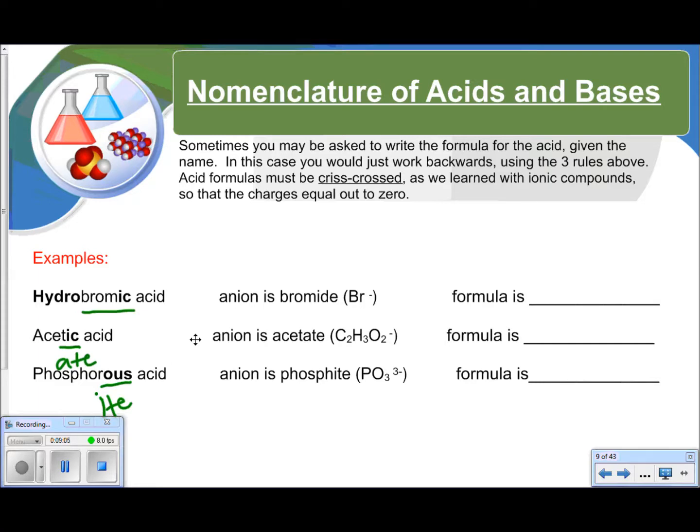So going backwards. If I give you the name and I want you to write the formula, there's something you need to figure out. You know that it's going to start with hydrogen. But you need to figure out what the anion is. And then crisscross. So hydrobromic acid. When it's hydro, you know it's hydrogen crisscrossed with just another element. Bromic means it's crisscrossed with bromide. So when you crisscross hydrogen and bromide, which has a negative 1 charge, you just get HBr.